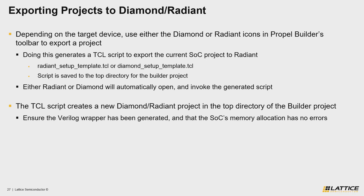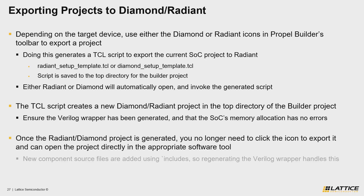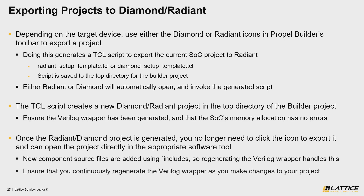Finally, the last thing that you should know about how Propel projects are exported is that you only need to click the icon in Propel Builder to generate the project the first time. The reason for this is because your Verilog wrapper file handles any changes that you make to your SoC design, meaning you only need to regenerate it in Propel for your changes to synchronize in either Diamond or Radiant. Because of this, it's important that you continuously regenerate your Propel Builder project's Verilog wrapper as you make changes to your SoC to ensure that those changes are synchronized with either your Diamond or Radiant projects.